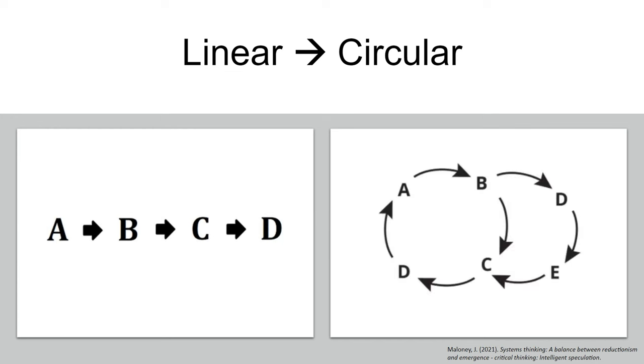What if outputs were also inputs in the same system or another one? Well, then we get something like this. You might be wondering, where does it begin? Where does it end? Unlike linear thinking, in circular thinking there is no specified end. You can see that there is continuous feedback among each element. In the examples we are going through today, we will be creating these loops and identifying causal relationships.